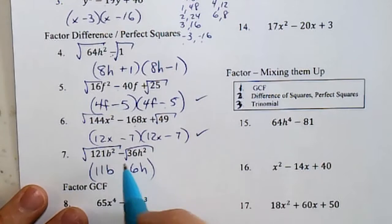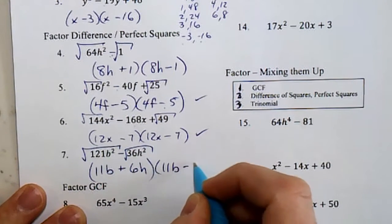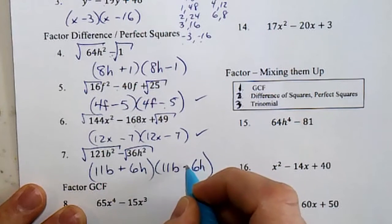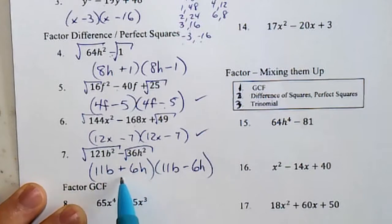Square root both. It's a binomial, so I'm going to have 1 plus and 1 minus. So trinomials have matching, binomials 1 of each.